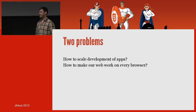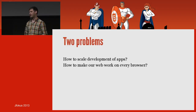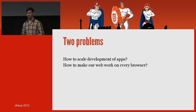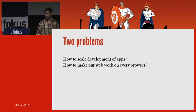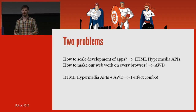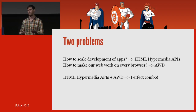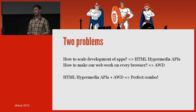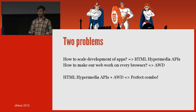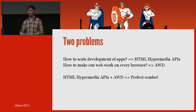This talk is about two problems: first, how can we scale the development of apps, and secondly, how can we make our web work on every browser? These problems aren't new but are becoming more important. I suggest we start building HTML hypermedia APIs to make it easier to scale apps, and use adaptive web design and progressive enhancement to make the web work on every browser. Combined, they're a perfect match — and you can serve your API and web from the same endpoint and codebase.